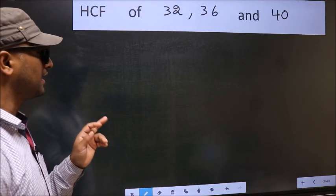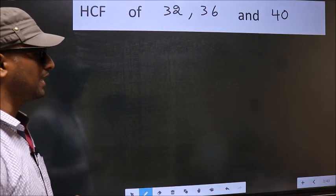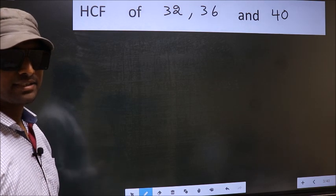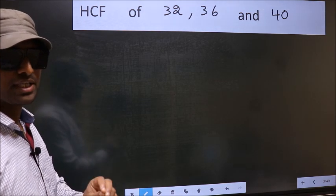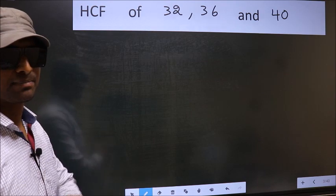HCF of 32, 36 and 40. To find the HCF, first we should do the prime factorization of each number separately.